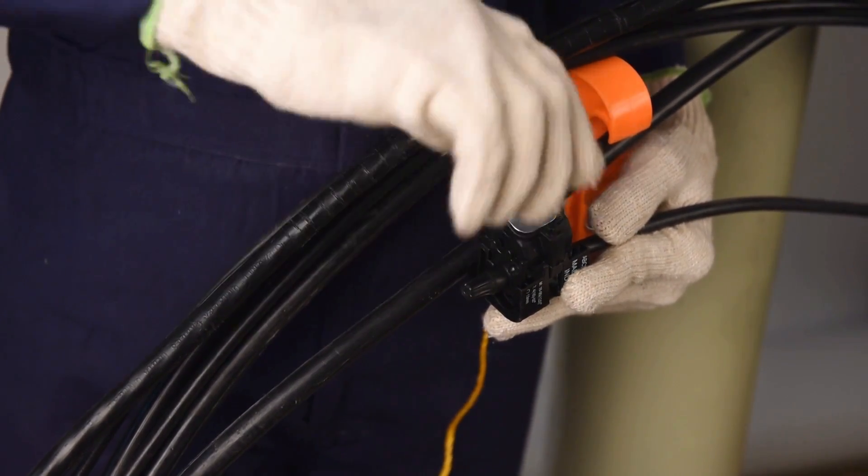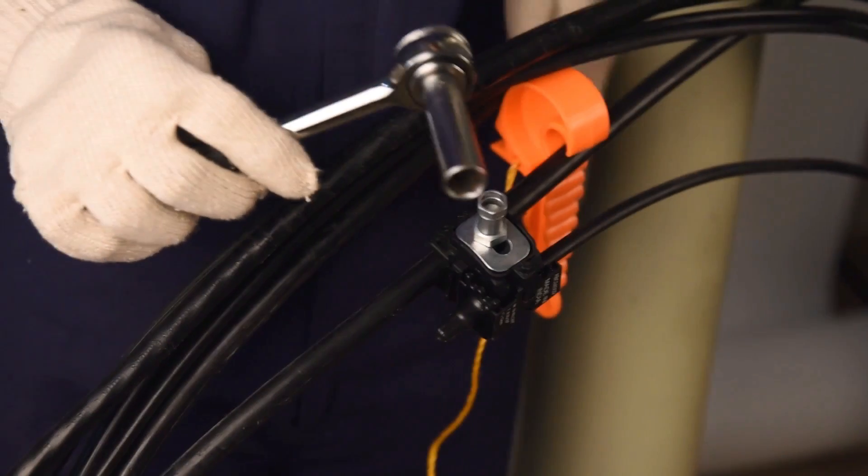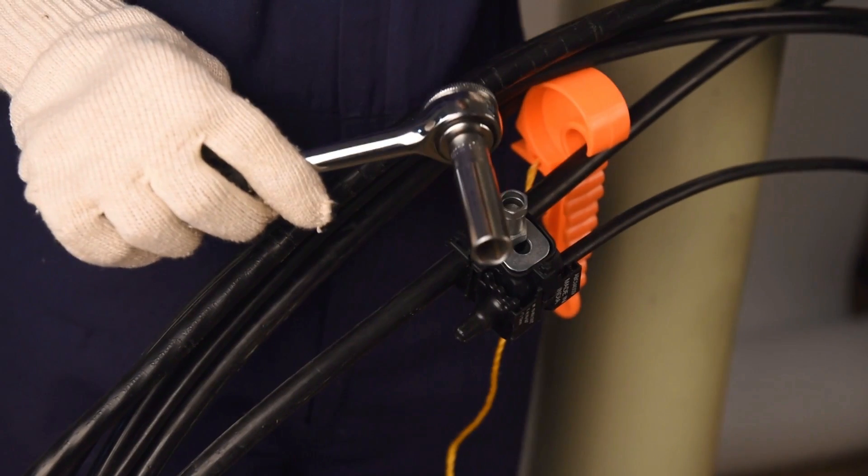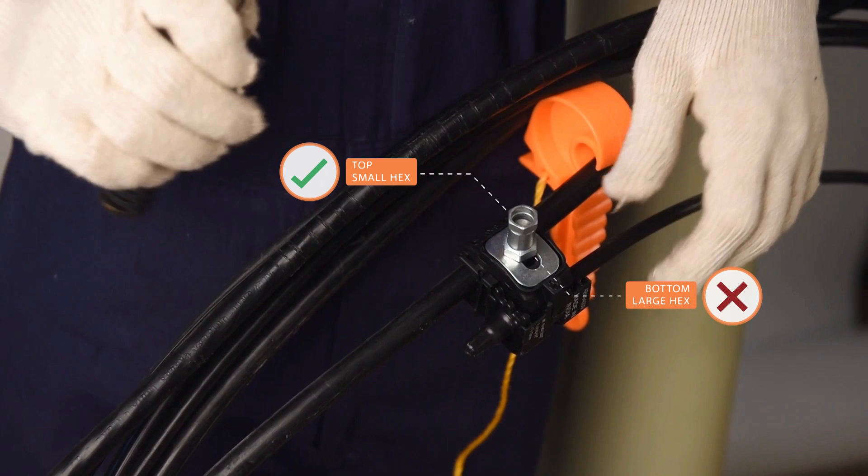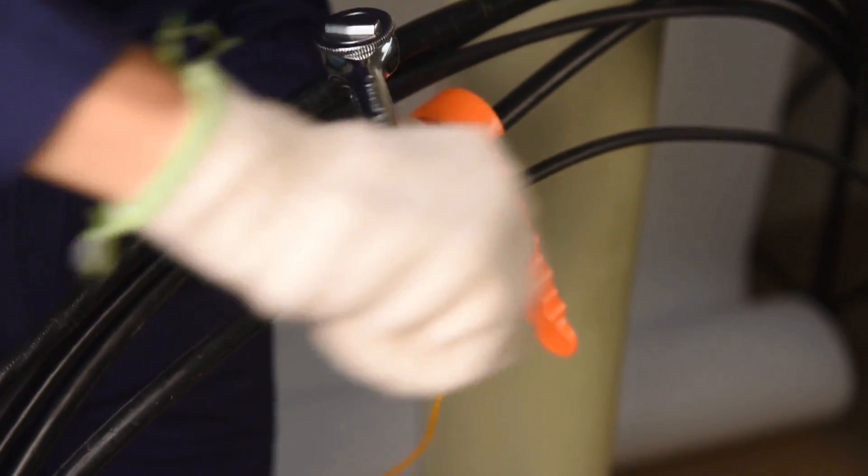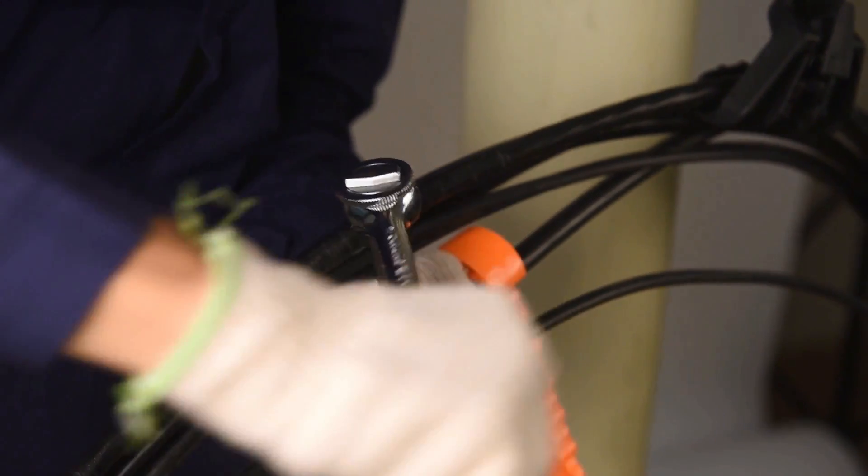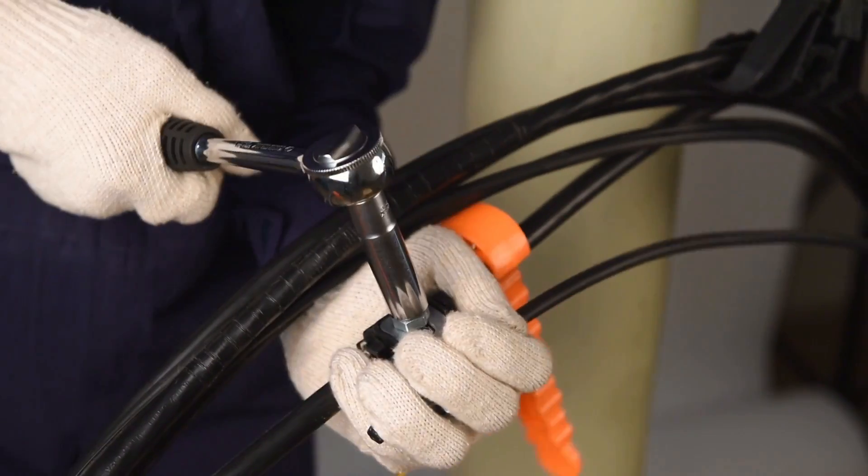Tighten the shear nut using the specified spanner size. Note: spanner size should be selected such that it fits with the top small hex and not the bottom large hex of the nut. Tighten the shear nut until the top small hex shears off.